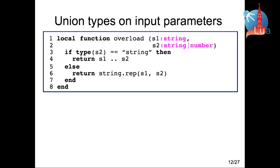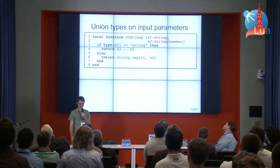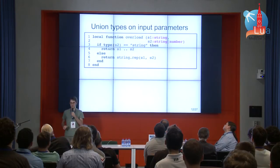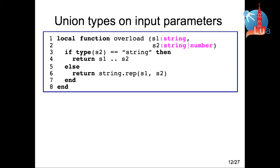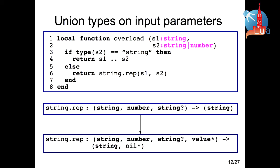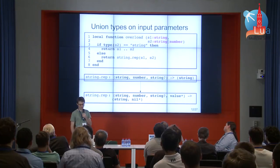We can also have union types in the input parameters. In this example, the parameter s2 is a union of string and number. We can use the type function to constrain this type, because in TypedLua 'type' is a primitive. So inside the if part, s2 is type string, and in the else part, s2 is type number. TypedLua has two modes of operation: a strict mode and a default mode. The default mode will always introduce a variadic tail to the input and return type to simulate flexible arity, while strict mode will not, to catch arity mismatches.